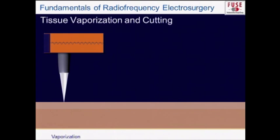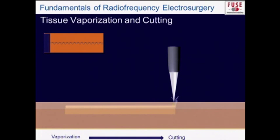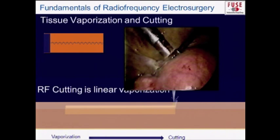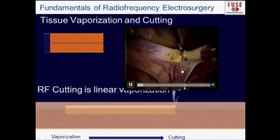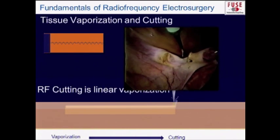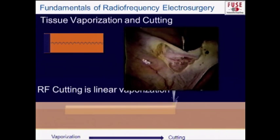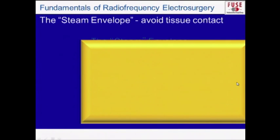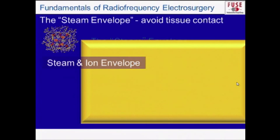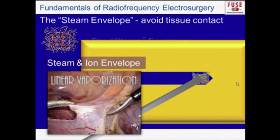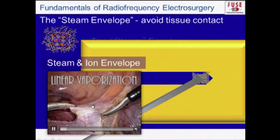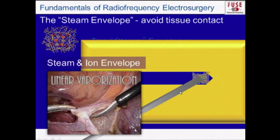How does vaporization or cutting actually work? The electrode is placed very near the tissue, activated to create a steam envelope, then extended linearly — cutting is linear vaporization. The electrode stays within that steam or vapor envelope, which has abundant ions and very low impedance. A hook electrode is shown vaporizing in non-contact mode with very little thermal spread to adjacent tissue.